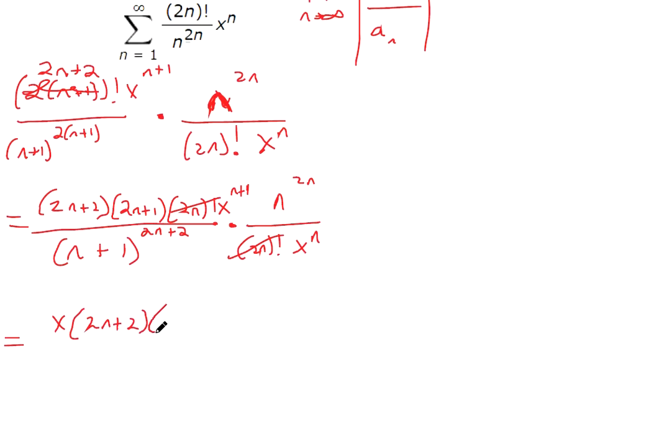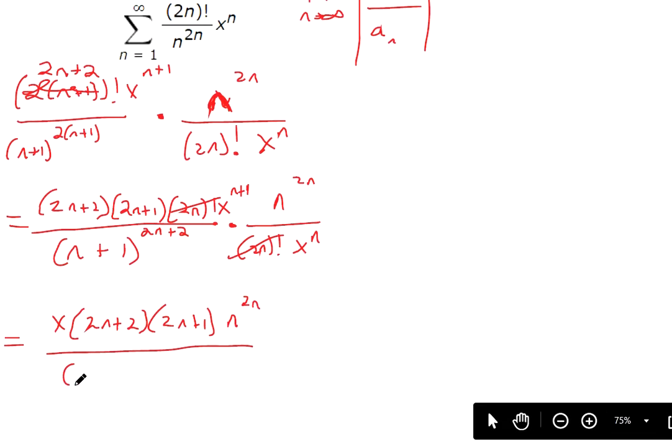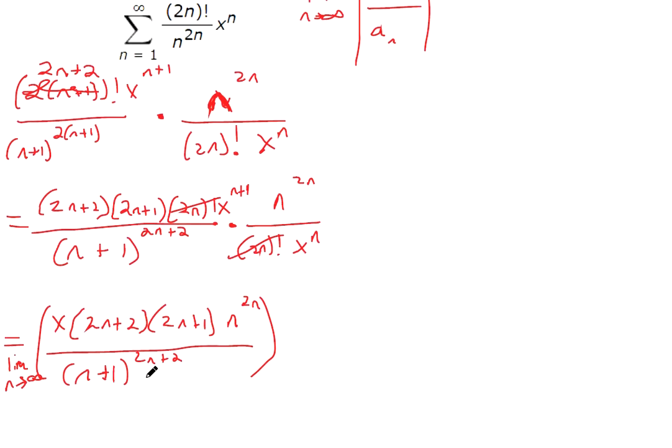And then I also expanded this factorial so that the 2n factorials can cancel. So we've got 2n+2, 2n+1, n to the 2n power, over (n+1) to the 2n+2. Let me see what else we can do here.